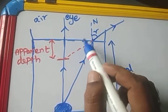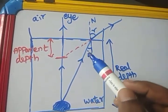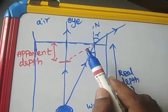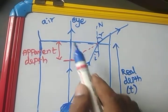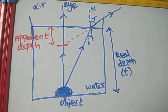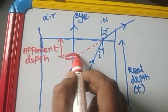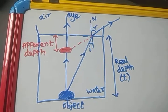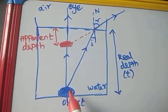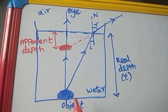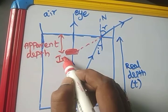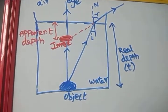Another ray hits the water-air interface. At this interface there is a normal line. The light enters from a denser medium to a rarer medium, so it moves away from the normal. This line is extrapolated and meets the first ray. When the two rays meet, the image is formed at that point. So whenever you view a coin or any object placed inside a beaker containing water, you are able to see the object at a higher position than it actually is. The actual position is the real depth; the position where you see it is the apparent depth.